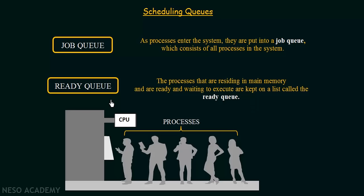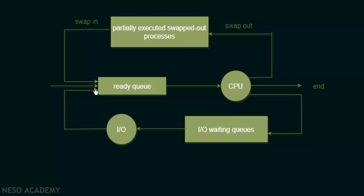Once the processes are in the ready queue and receive the CPU for execution, let us see what can happen. This diagram shows what happens to a process when it goes from the ready queue into the running state — when it gets the CPU and what cases can occur. From the ready queue, a process gets the CPU and begins execution. The first thing that can happen is it completes its execution and the process ends — it goes to the terminated state.